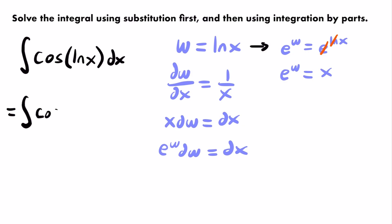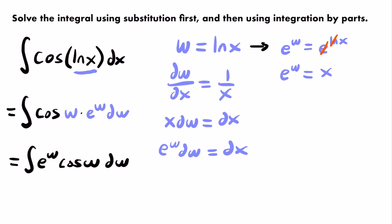Making both substitutions — ln(x) replaced by w, and dx replaced by e^w dw — we get the integral of cosine of w times e to the power of w dw, or equivalently the integral of e^w times cosine of w dw. This integral is now in a form we can recognize as solvable using integration by parts.